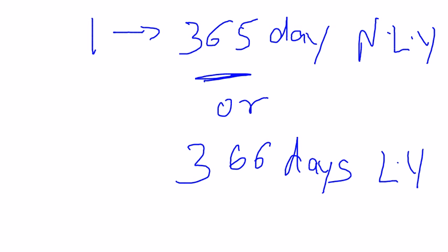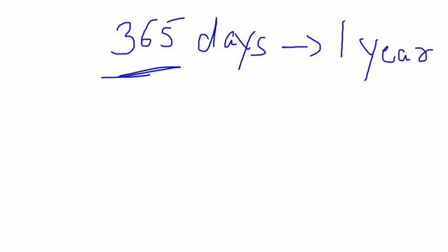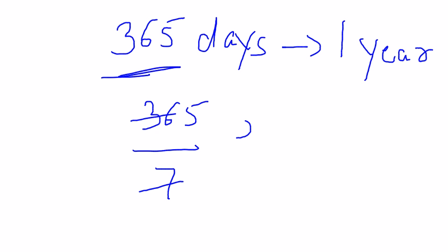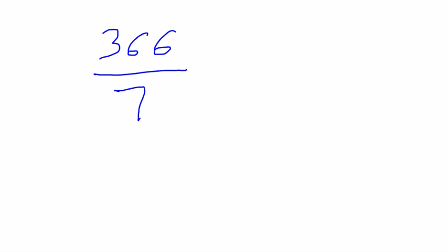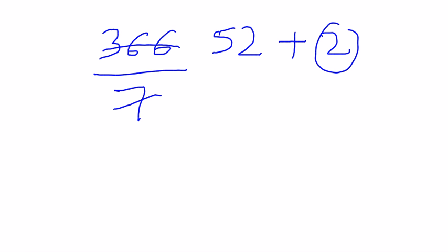To find the number of odd days in a non-leap year with 365 days, we divide by 7 to see how many weeks can be formed. 365 ÷ 7 gives 52 weeks plus one remaining day, so a non-leap year has one odd day. Similarly, for a leap year with 366 days, dividing by 7 gives 52 weeks plus two odd days — so a leap year has two odd days.